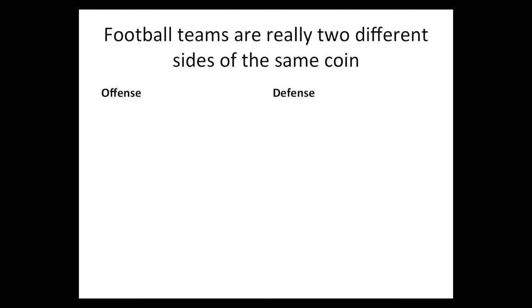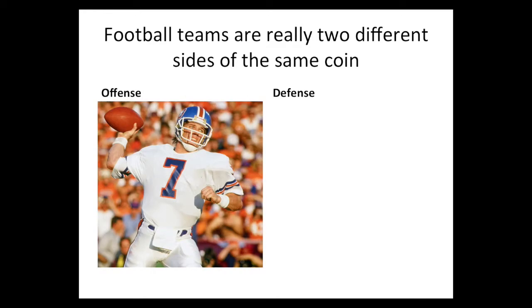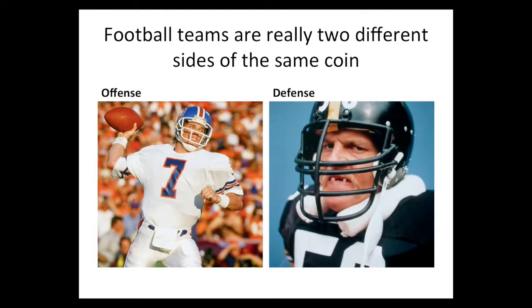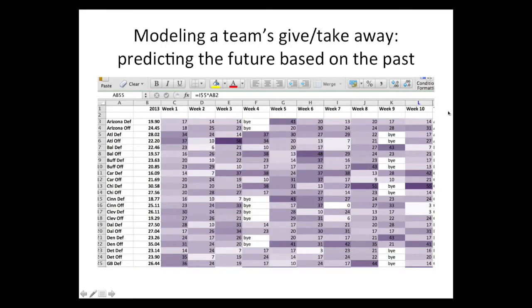Football teams are two sides of the same coin. Even though it's one team, there are really two different aspects: the offense – presented here with John Elway – whose job is to score points, and the defense, whose job is to prevent the other team from scoring. We have to model them separately. A team can have a really good offense and a bad defense. We have to figure out how to tell if the offense is good or the defense is good.